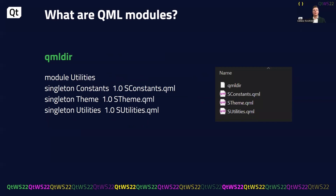In the past, QML modules were defined using QMLDIR files — text files where you could specify which items should be part of the module. You specify the module identifier and then list the items. You could mark some files as singletons or as private, to be used only by other module items. That solution is still used in many projects. However, the new approach with the CMake qt_add_qml_module command is more unified.